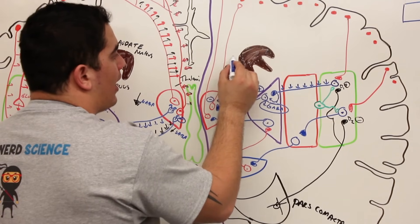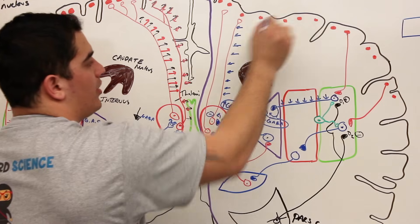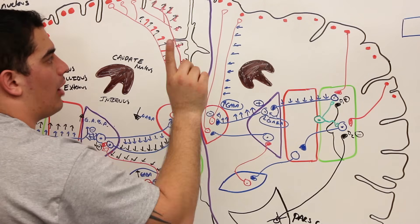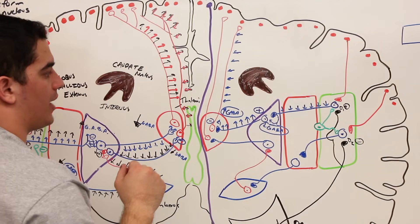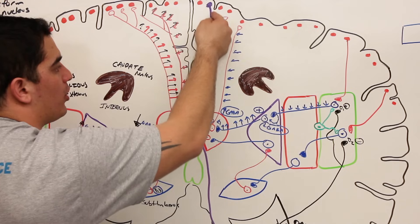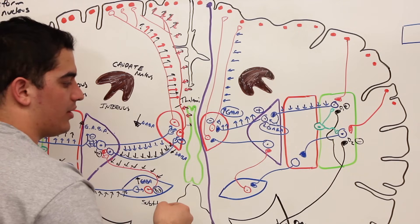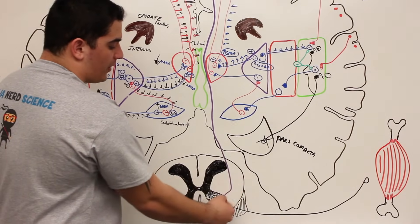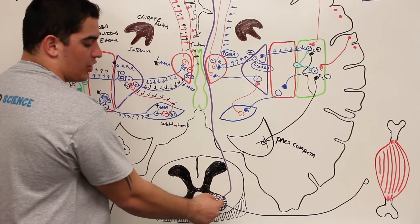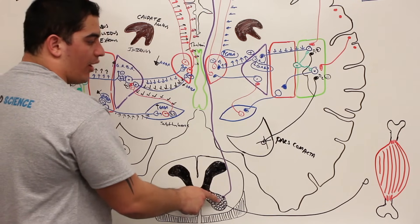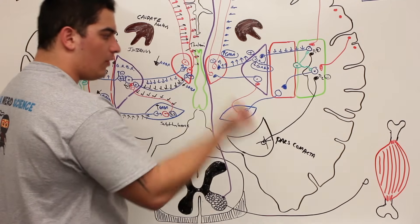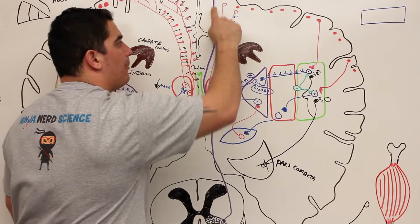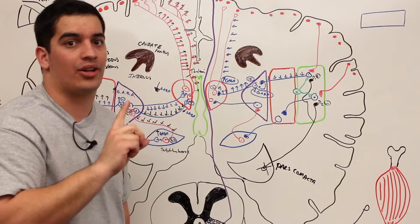That GABA inhibits the thalamic neurons, causing decreased action potentials moving up to the cerebral cortex. Through the corticospinal tract, stimulation of the primary motor cortex travels down, decussates at the pyramids of the medulla, descends through the lateral white column, and synapses on neurons within the ventral gray horn. Those cell bodies exit via alpha motor neurons to innervate muscles — but we've inhibited the impulses going to the cortex, resulting in decreased output to the muscle.